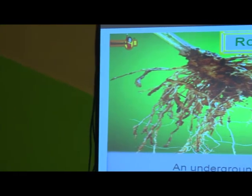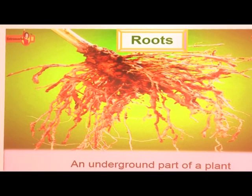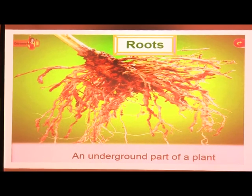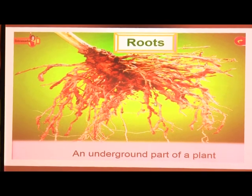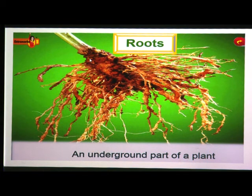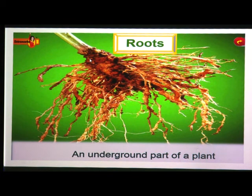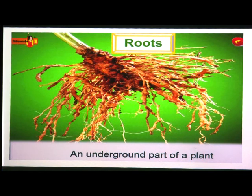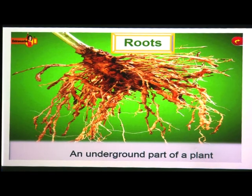Roots. The part of the plant that grows under the ground is called the root system. This is an underground part of the plant. It binds the soil and allows the plant to stand straight. It always grows towards gravity and moisture, and away from light.